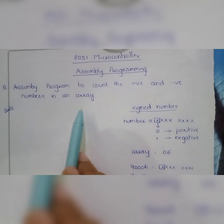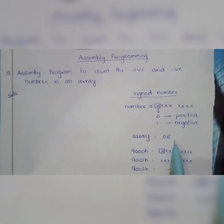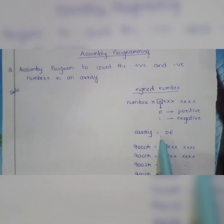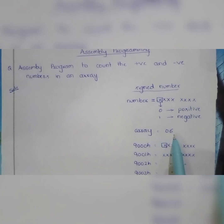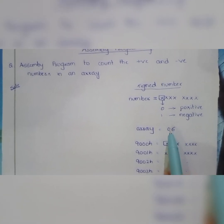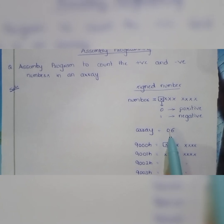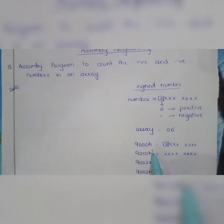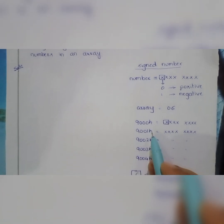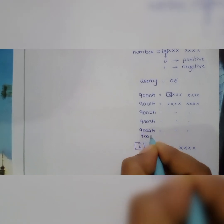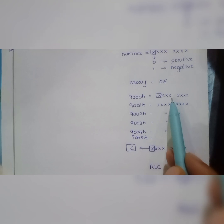Let us consider the size of an array is 6 — it may vary. In this example, we have considered the array size as 6, and all 6 numbers are present in external memory locations beginning from address 9000H. Addresses 9000, 9001, 9002, 9003, 9004, and 9005 are the 6 memory locations holding 6 different 8-bit numbers. We need to check whether each number is positive or negative.